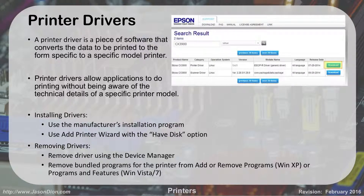Print drivers are software you install when you set up a printer. They convert the data to be printed into usable information for that specific printer. Windows knows how to handle some basic printers but not all — when you buy a brand new printer, you'll have to install that driver. Drivers usually come on a disk with the printer or you can download them from the manufacturer's website. They allow applications to print without needing to know the specific details of the printer model. To install them, use the manufacturer's installation program or the Add Printer Wizard with the 'Have Disk' option in Windows. To remove them, go into Device Manager or through Add/Remove Programs in Windows.